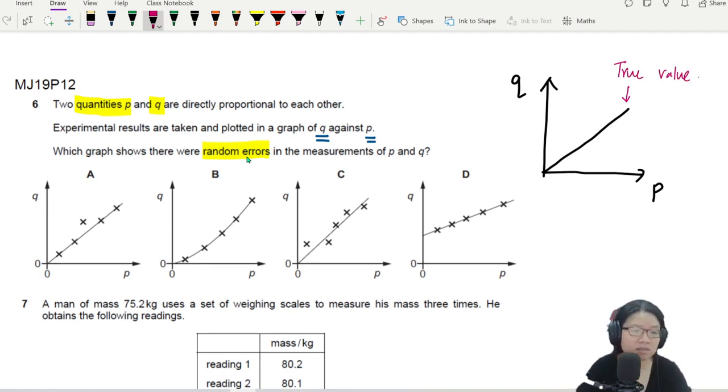So B, B is this. If there's random error, it means that sometimes you get reading above the true graph line. Sometimes you get reading below the true graph line. So in this case, the answer is C. But wait first, I explain a few things.